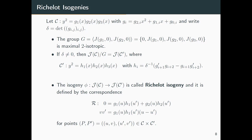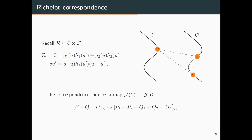There exists a nice Richelot correspondence to push points through the isogeny. Given a point P = (u, v) on curve C, plugging u into H₁ gives a quadratic polynomial in u', yielding two solutions for u'. Then plugging u, u', and v into the second equation gives one solution for v'. This means each point P on C corresponds to exactly two points P₁ and P₂ on C'.